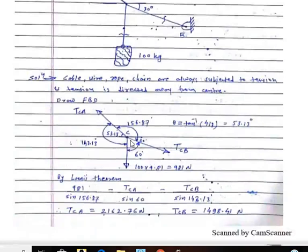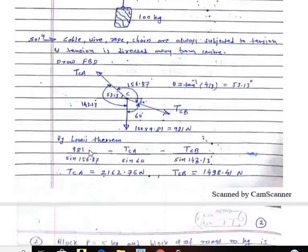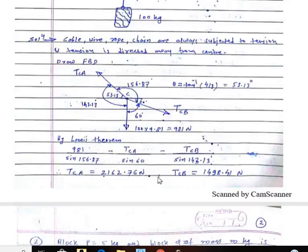For Lami's theorem, we have three forces that should be coplanar and concurrent, and those forces should be either all pulling or all pushing. Now applying Lami's theorem: the force 981 N divided by sin(156.87°) equals T_CA divided by sin(60°), equals T_CB divided by sin(143.13°). Cross multiplication gives us the tension in cable CA and tension in cable CB in Newtons. Problem number one is complete.